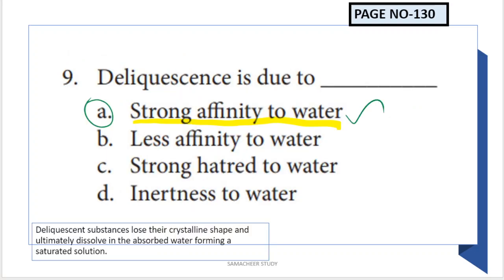Next question: deliquescence is due to strong affinity to water. Deliquescent substances attract and absorb water from the atmosphere, causing them to change shape.